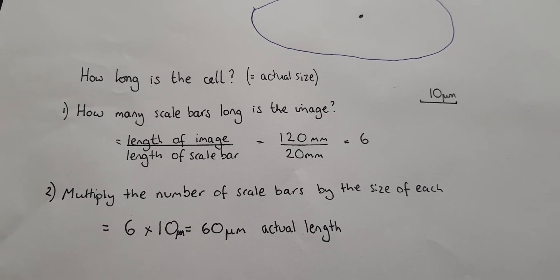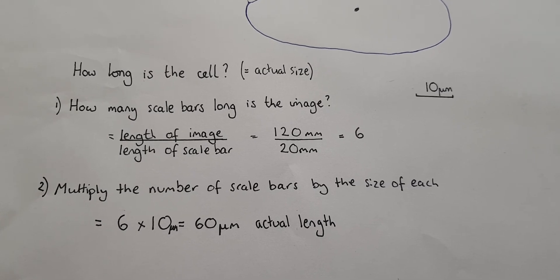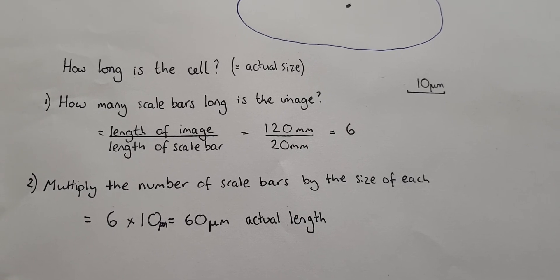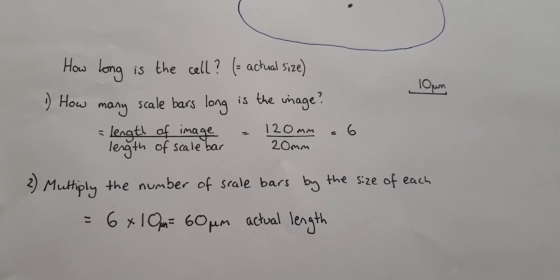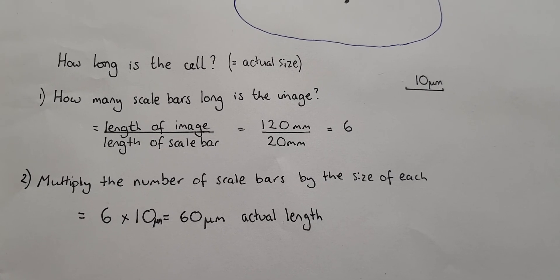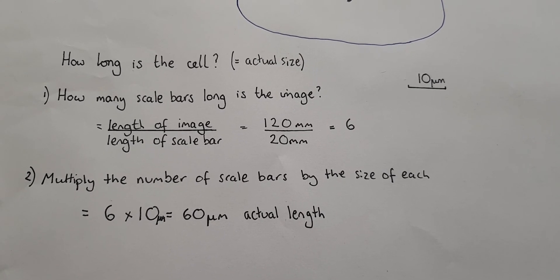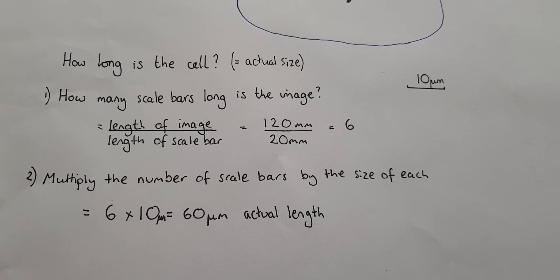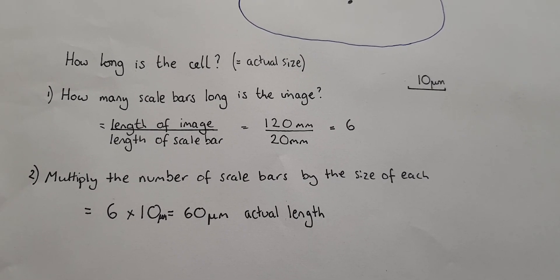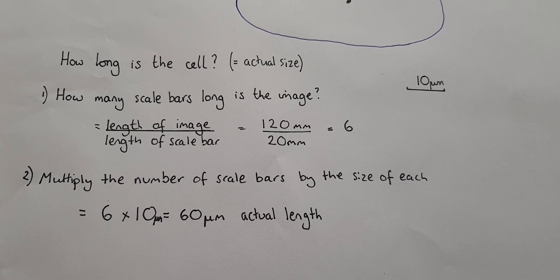So remember: if you're asked to calculate the actual size and you're given a scale bar, you don't need to use the magnification equation. Work out how many scale bars long the image is by measuring the length of the image and the scale bar in millimeters, then divide the image length by the scale bar length. Finally, multiply the number of scale bars by the size each scale bar represents. The units of the actual length will be the same as written on the scale bar.